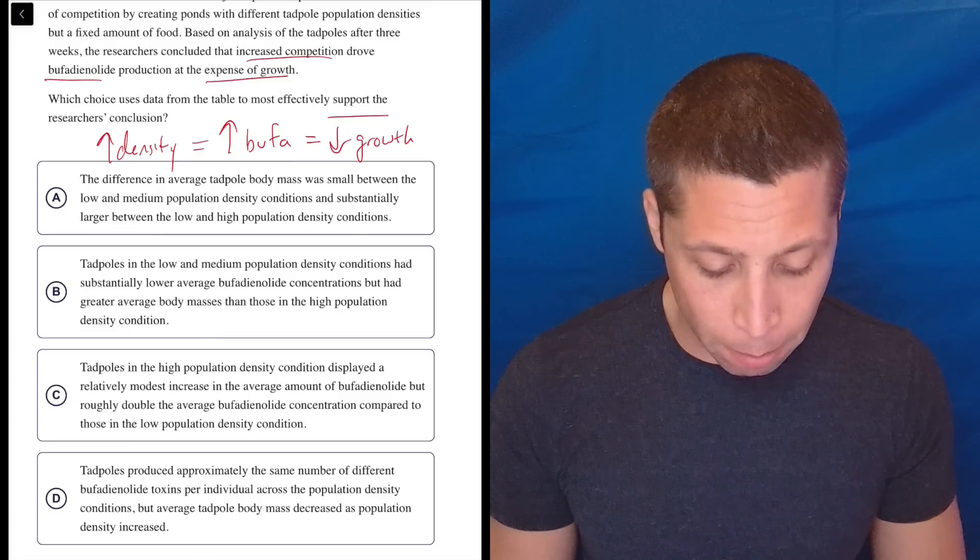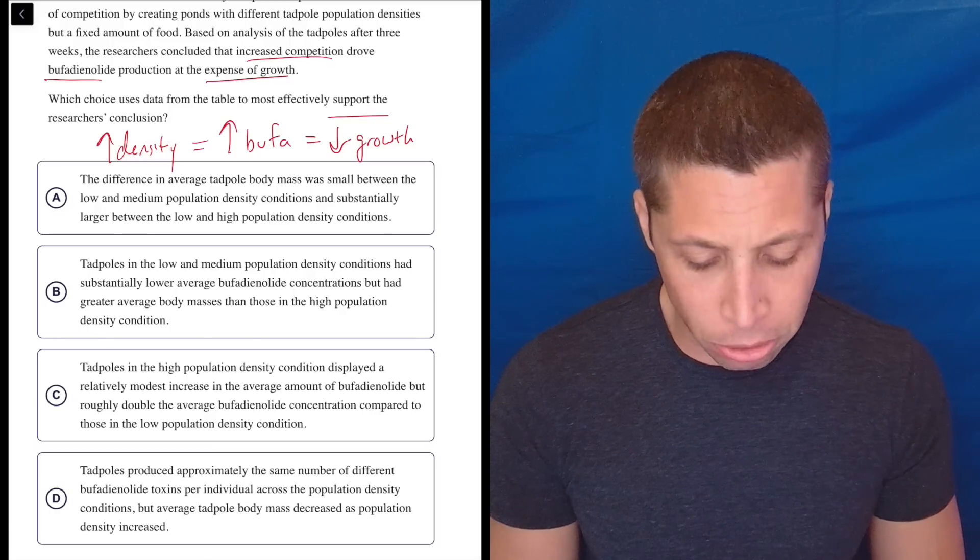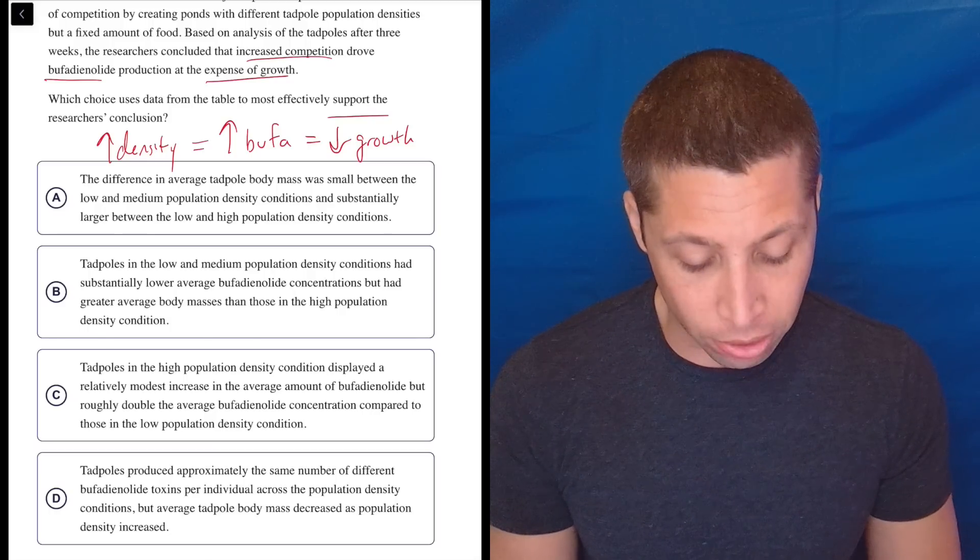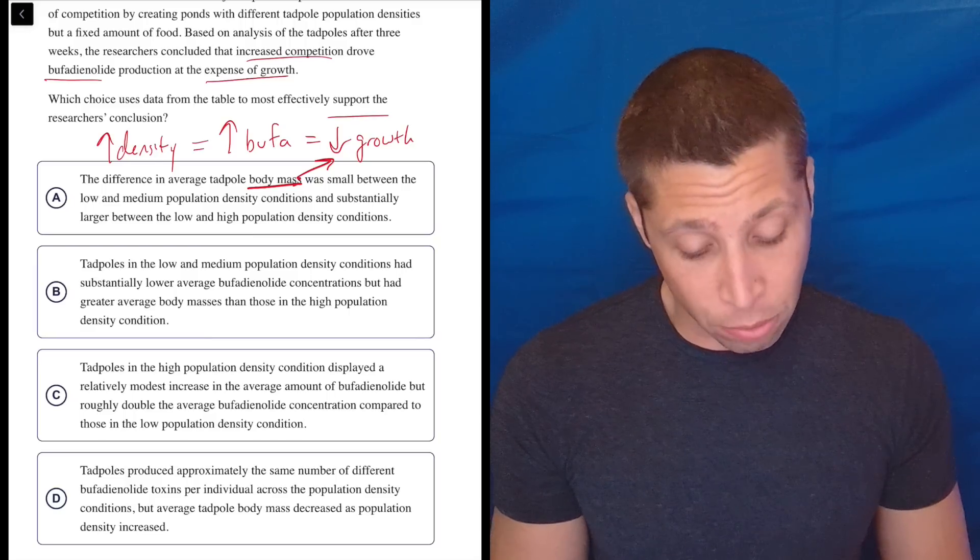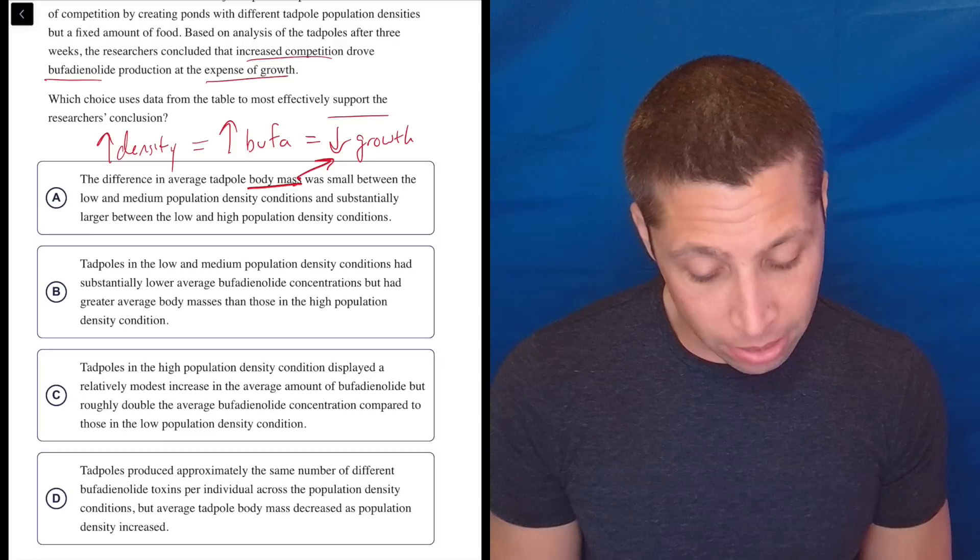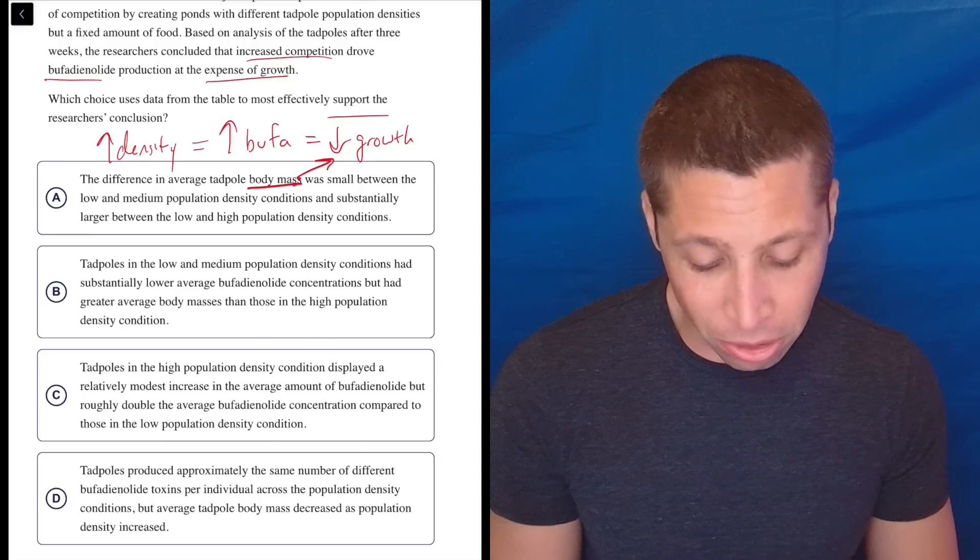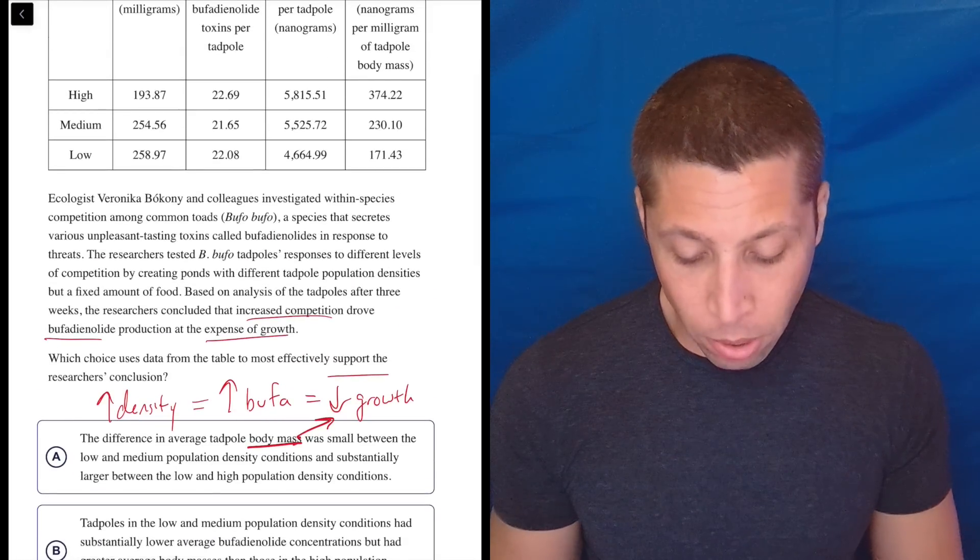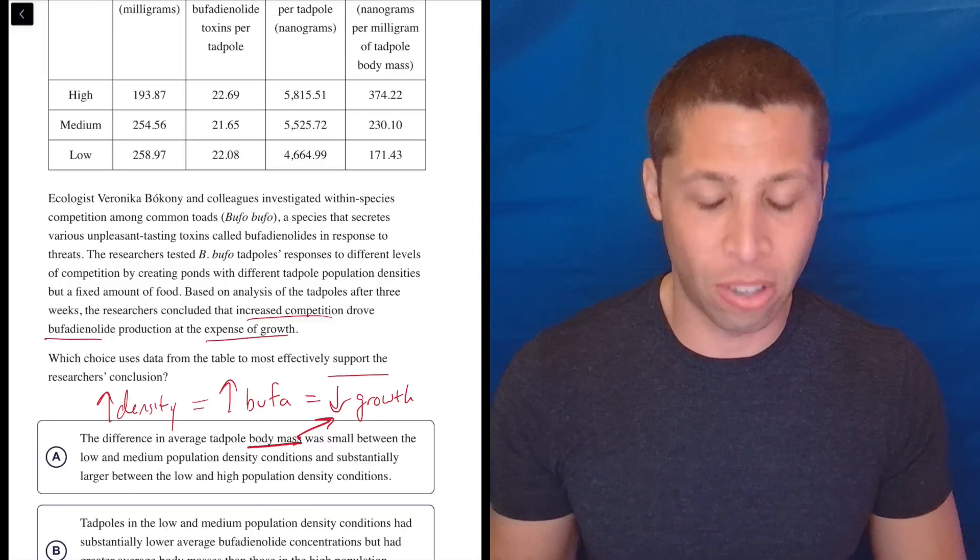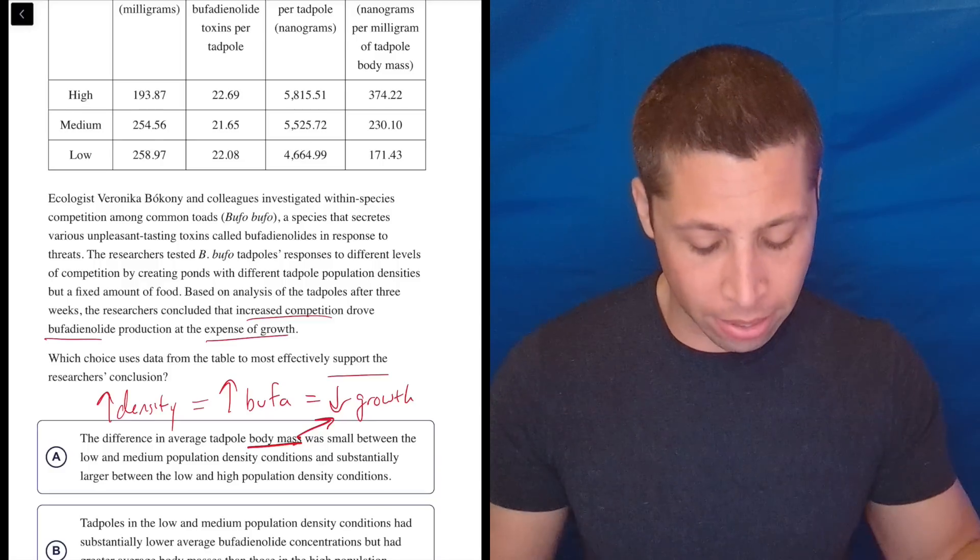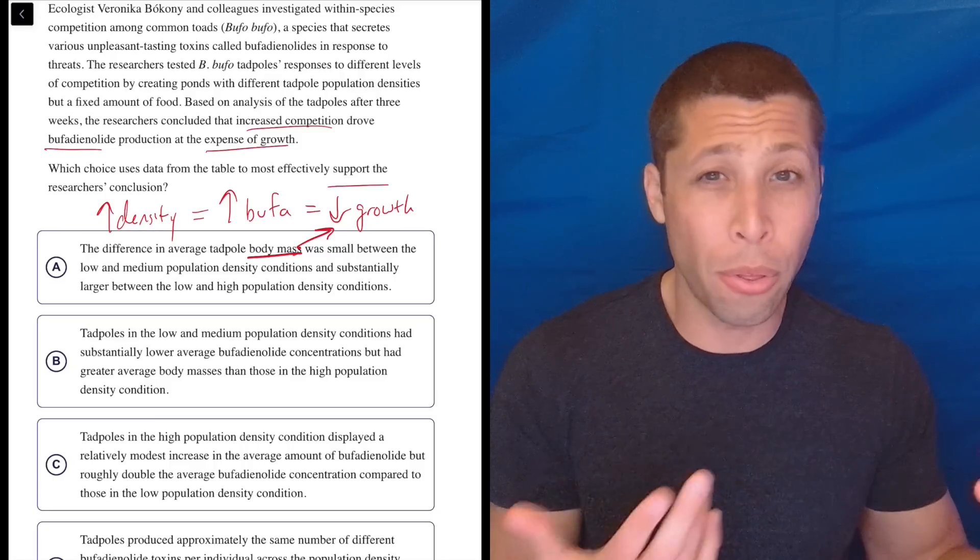A, the difference in average tadpole body mass was small between the low and medium population density conditions and substantially larger between the low and high population density conditions. So I'm assuming that body mass is the same as growth, but what does that have to do with—I don't know. I mean I guess the difference in body average mass was small between the low and medium density, so this means it's essentially larger. Like this isn't really comparing the right thing, right? I want to talk about a trend. To say that we have the difference between things is not quite saying that there's a trend. Of course, if there is a trend, then I guess the higher the density, then the lower the growth, the less the mass is going to be.